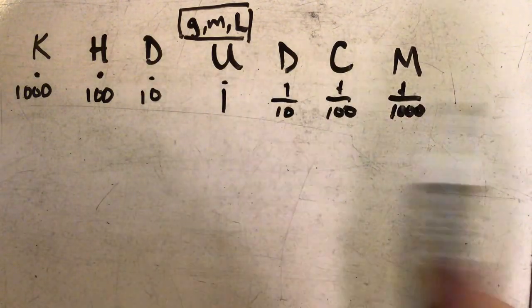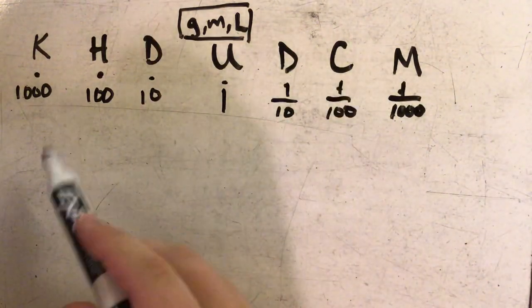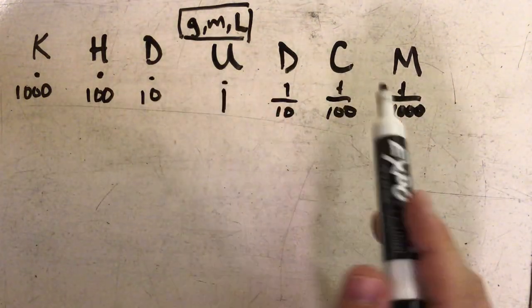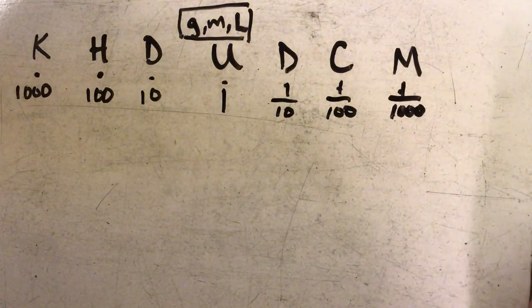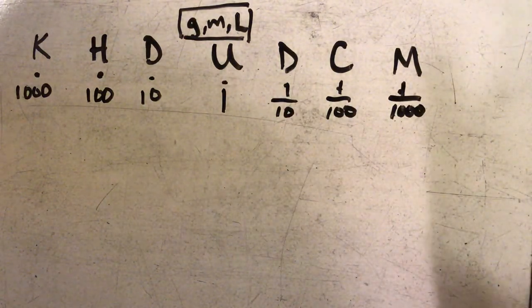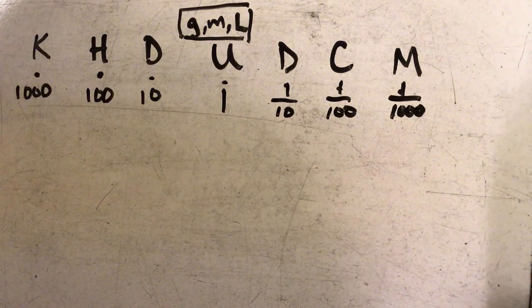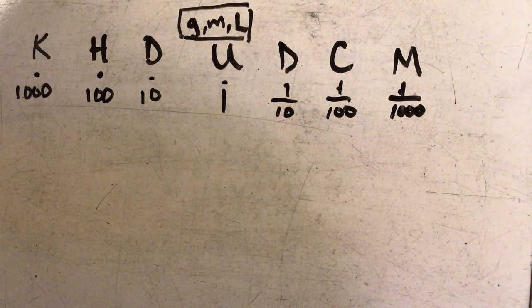Really all I'm doing is I'm multiplying or dividing by powers of 10 to go from unit to unit. And what's really good and nice about dividing or multiplying by powers of 10 is that I really just need to move my decimal point.